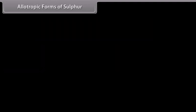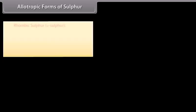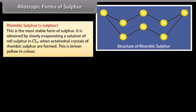Allotropic forms of sulphur. Rhombic sulphur: This is the most stable form of sulphur. It is obtained by slowly evaporating a solution of roll sulphur in CS2. When octahedral crystals of rhombic sulphur are formed, this is lemon yellow in colour.